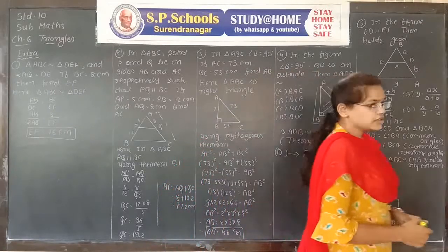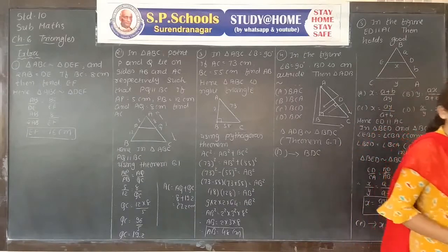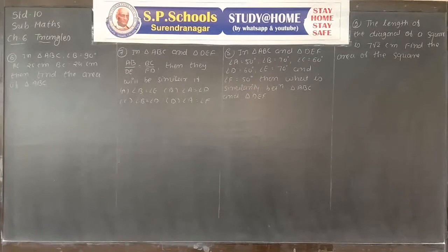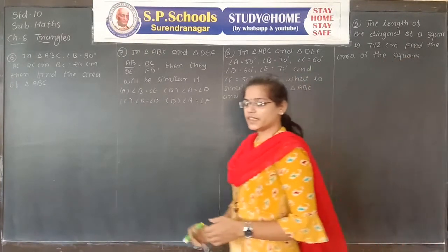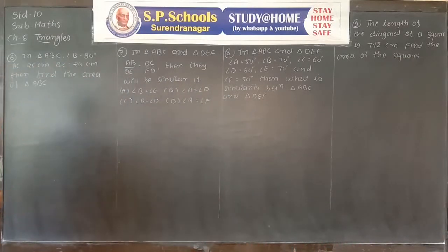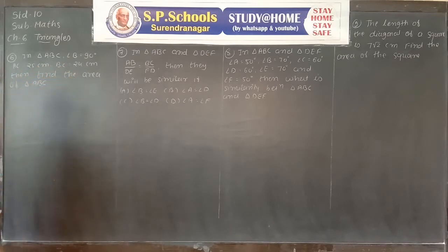The extra five sums are completed. Now the sixth problem: in triangle ABC, angle B equals 90 degrees, AC equals 25 cm, BC equals 24 cm. Find the area of triangle ABC.